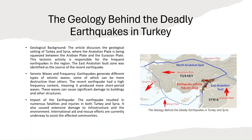Seismic waves come in different types, and their frequencies play a crucial role in the level of destruction they cause. The recent earthquake in Turkey had a high frequency content, meaning it unleashed more short-period waves, which can be particularly damaging to buildings and structures. The consequences were heartbreaking — many lives were lost and communities shattered. The impact extended not only to Turkey but also to Syria, with crumbling buildings and altered landscapes across the region.